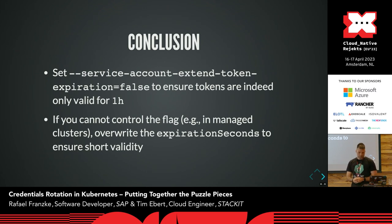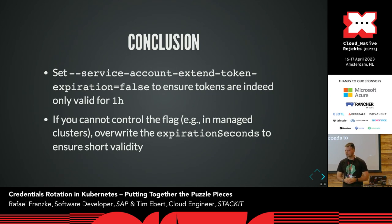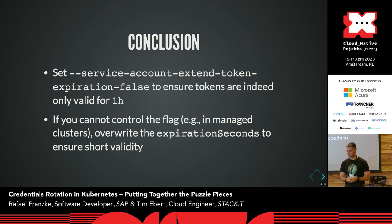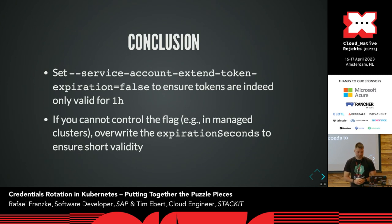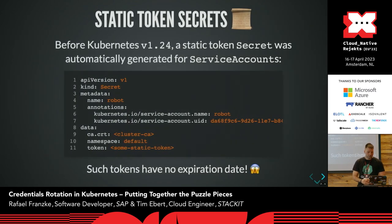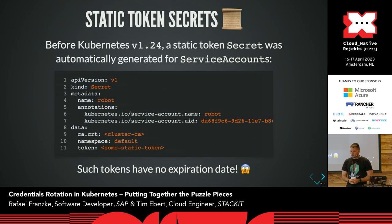If you cannot control the flag — maybe because you're using managed clusters like GKE where you don't have full control over the API server — then you can also simply use a different expiration time like 3,606 or something else to ensure you have a short validity.